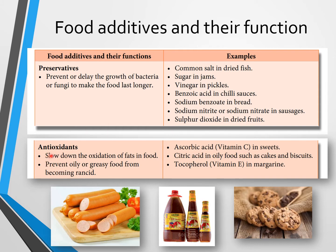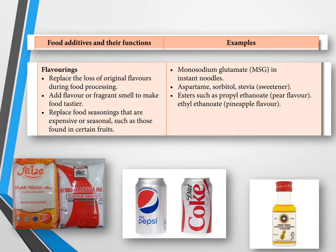Antioxidants are used to slow down the oxidation of fats in food — for example in biscuits and cakes — and to prevent oily or greasy food from becoming rancid. Examples include: ascorbic acid (vitamin C) in sweets, citric acid in oily foods such as cakes and biscuits, and tocopherol (vitamin E) in margarine.